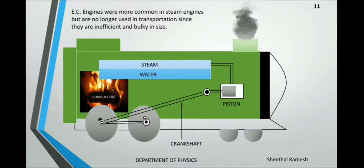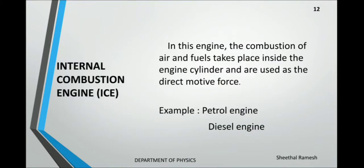External combustion engines are very common steam engines. They are inefficient because they are bulk in size and are not used in transportation. Next is the internal combustion engine. In an internal combustion engine, ignition and combustion of the fuel takes place inside the engine itself. The engine then partially converts the energy from the combustion to do work. The engine consists of a fixed cylinder and a moving piston. Examples for internal combustion engines are petrol engines and diesel engines.